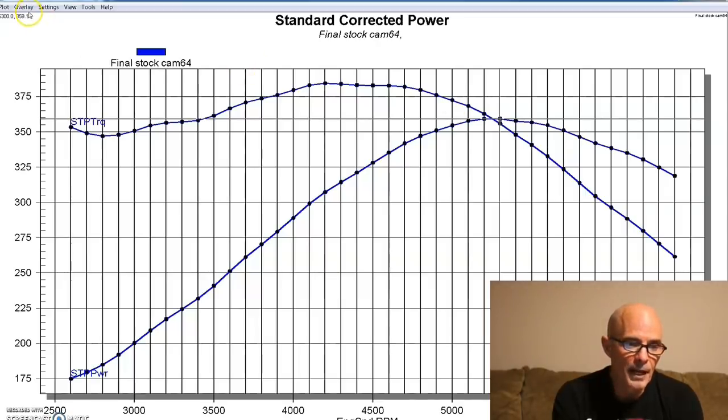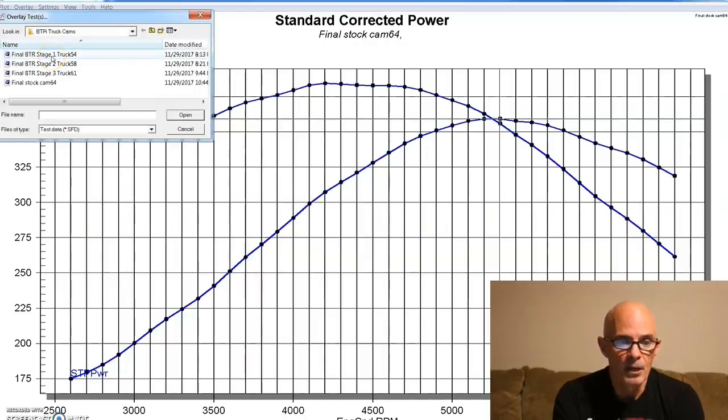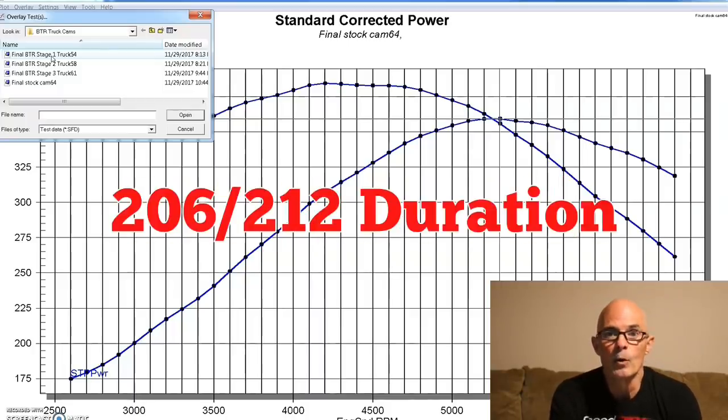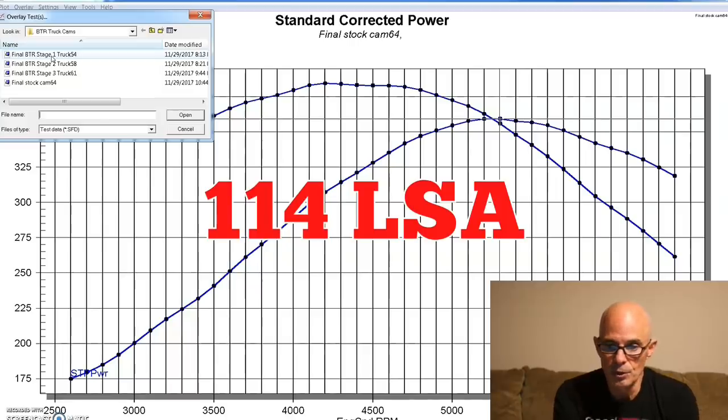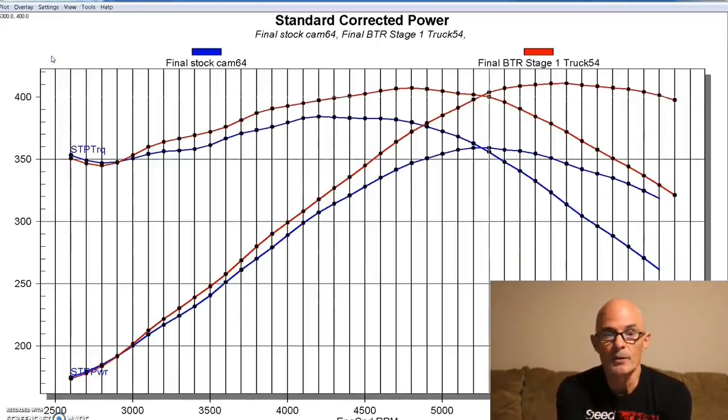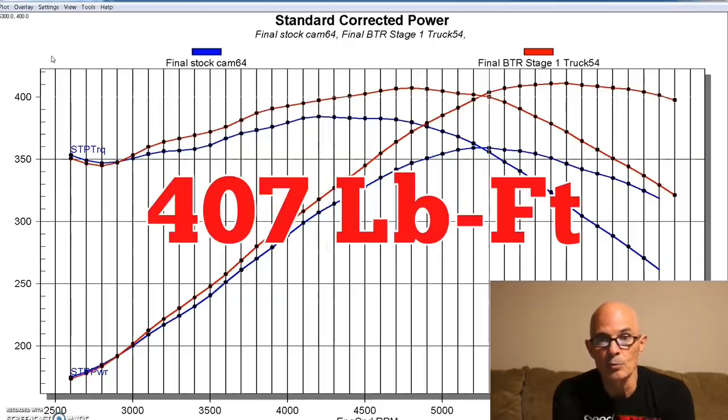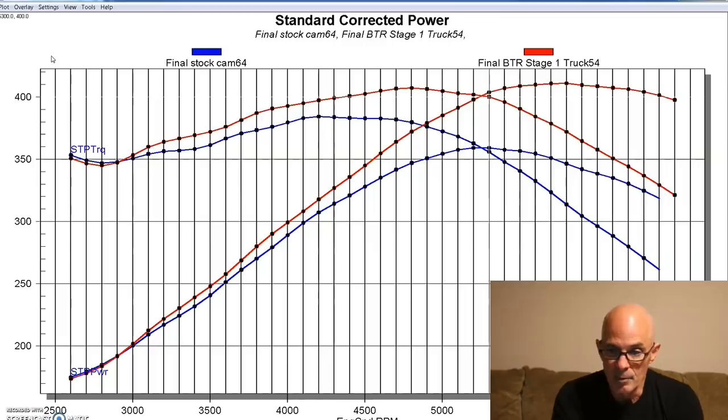Then once we swapped out that stock LM7 cam for the stage 1 truck cam from Brian Tooley Racing, and I'll go ahead and post the specs for the stage 1 cam up here so you guys can take a look at them. And that way we can compare the 1, the 2, and the 3. So these are the results for the truck cam. As you can see, we picked up quite a bit of power. The peak power numbers for the stage 1 cam jumped up to 411 horsepower and 407 foot-pounds of torque. So both the peak power and peak torque were up. And the peak power was up quite a bit as you can see. We didn't really lose anything down low. We loaded this thing down as low as 2500 RPM.